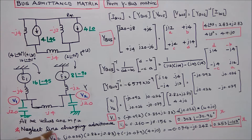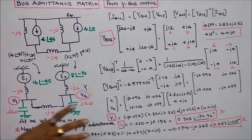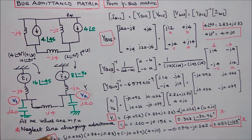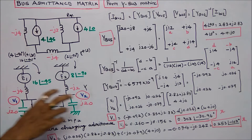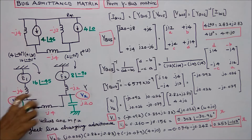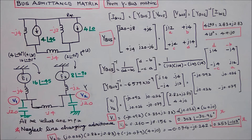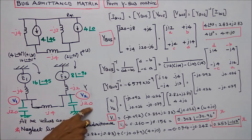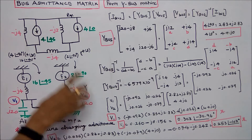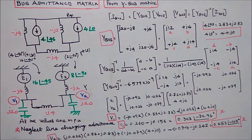Neglect line charging admittance. The system consists of two shunt capacitors: J20 per unit and J20 per unit. All values are in per unit.